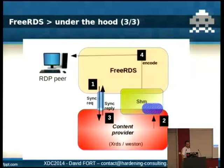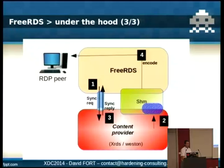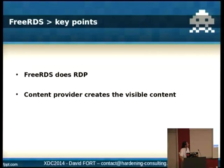In FreeRDS, the frame generation is FreeRDS-initiated. That means when FreeRDS wants to send a frame to the RDP peer, it first sends a sync request to the content provider. The content provider will update the shared memory — update the frame buffer and the list of damage — and reply with a sync reply message. Then FreeRDS takes care of encoding the damage region using the right codec. What you should remember is that FreeRDS does only RDP, and we have the content provider that creates the visible content. Let's talk about a special content provider, which is XRDS.